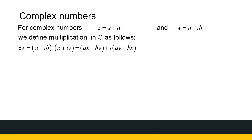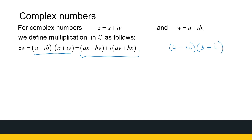Now let's look at multiplication — this gets a little bit different. If I have two complex numbers Z and W, multiplying them gives a real part of AX minus BY and an imaginary part of AY plus BX. Where does that come from? Let's look at an example. If I have 4 minus 2i multiplied by 3 plus i, we multiply out the brackets the same way as in algebra with real numbers.